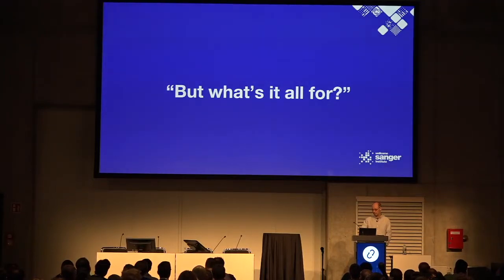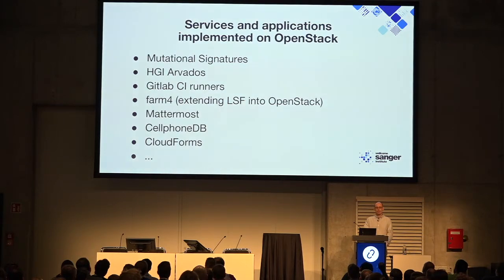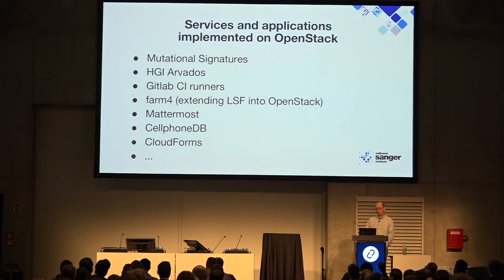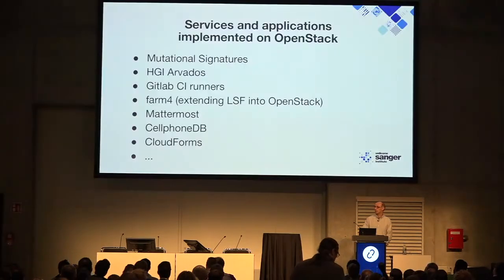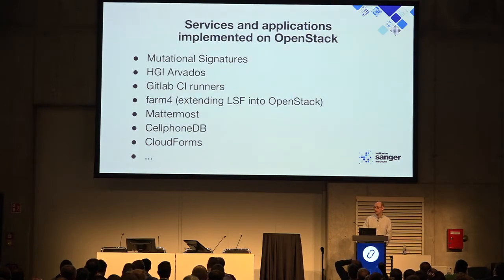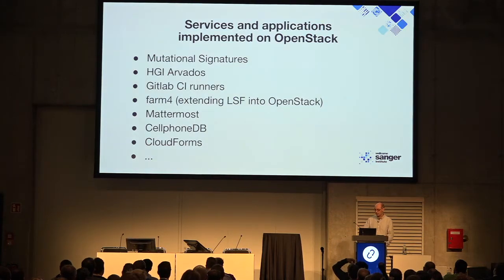But what's it all for? We've got lots of things running on OpenStack. IT uses it for CI runners; Farm 4 I've mentioned. Scientists use it for things like the Mutational Signatures Project, human genetics informatics running AVADAC, CellphoneDB — a database of cellular phenotypes, nothing to do with cell phones. CloudForms is an orchestration system for less technical users: you click to buy a database server and it's ready. And one impressive thing: RStudio running in a web browser, personalised — a user logs into a portal, a personalised instance running on Kubernetes spins up inside OpenStack, and it's all hands-off.